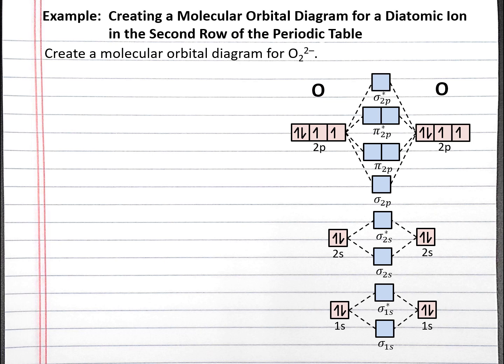Let's first fill in our molecular orbitals for the O2 molecule, then we'll adjust for the charge on peroxide. There are a total of 16 electrons from our two oxygen atoms, so we'll add these 16 electrons to the molecular orbitals. We start filling the molecular orbitals with the lowest energy, so we'll put two electrons in the sigma 1s bonding molecular orbital. Then two electrons go into the sigma 1s antibonding molecular orbital.